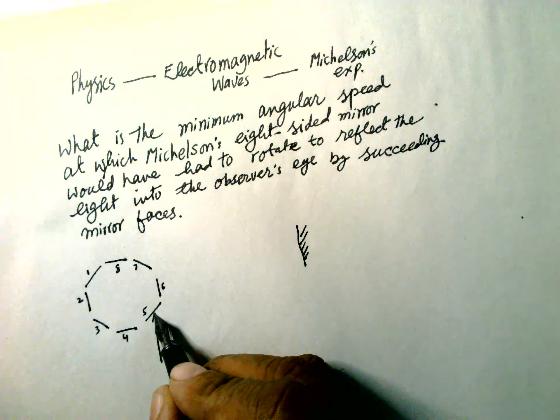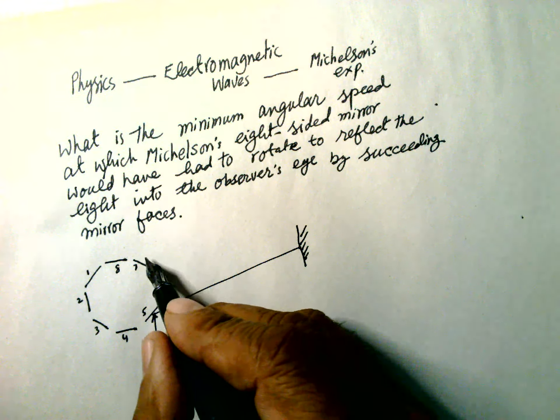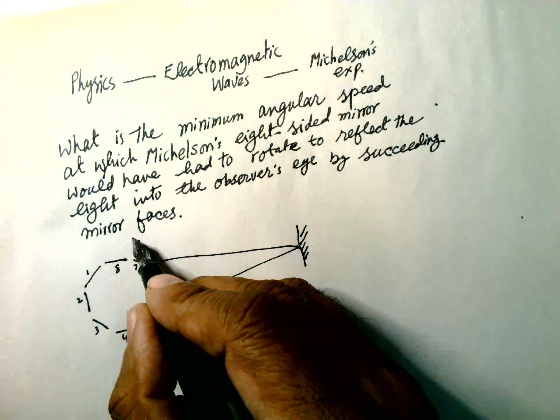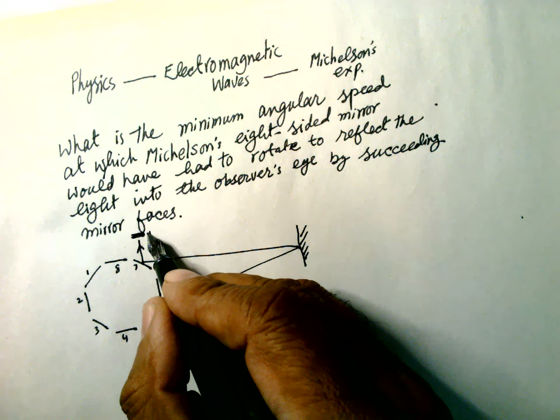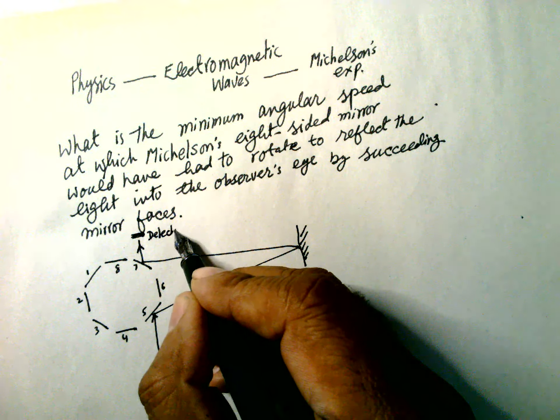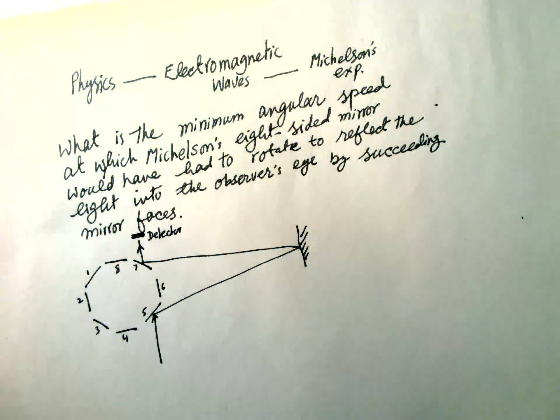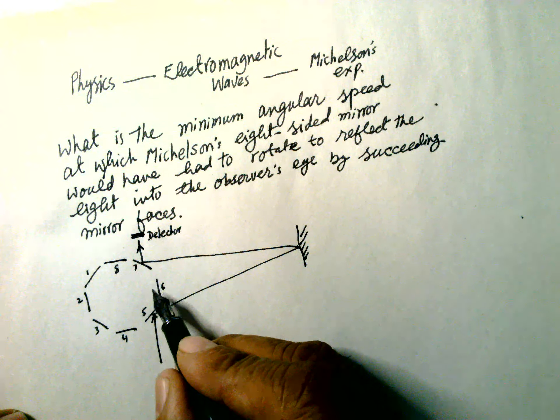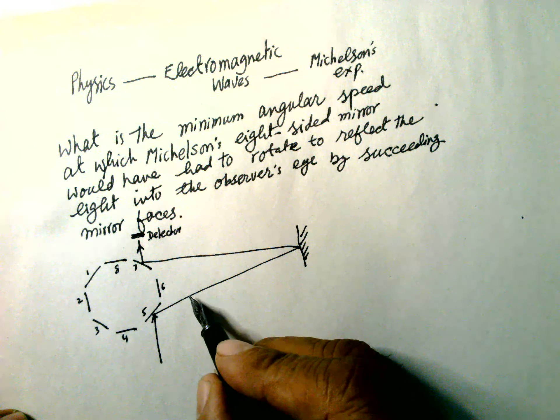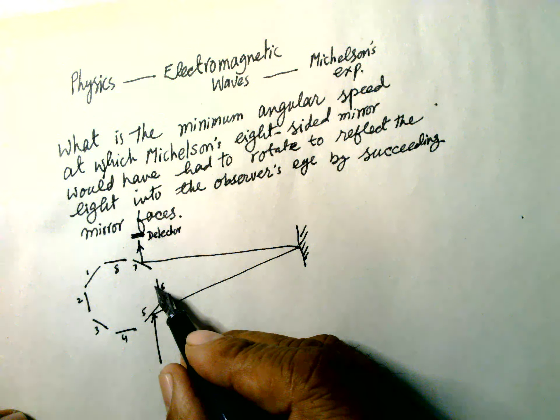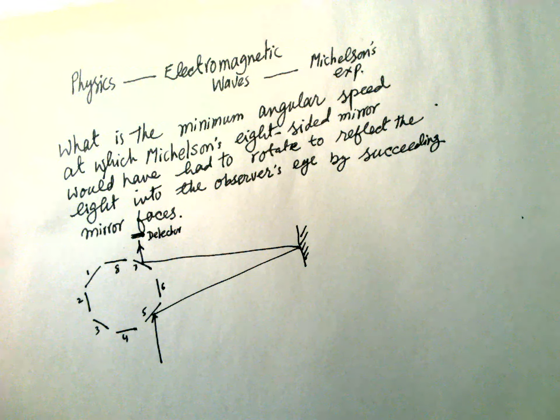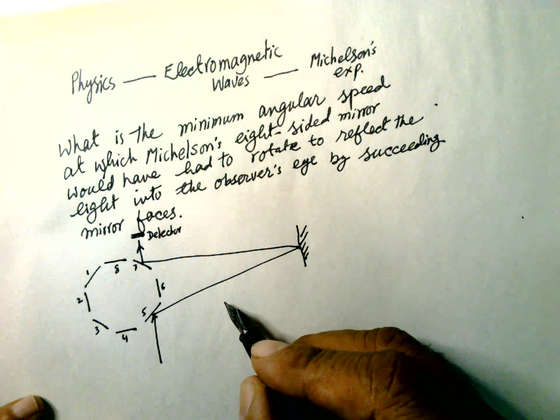And this is a fixed mirror that lies from here. This goes, reflects here and out, and this is a detector. So this face goes, five becomes, five goes to here and four comes here. So this is a rotation, an eight-sided mirror.